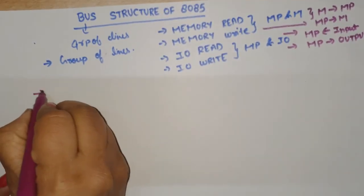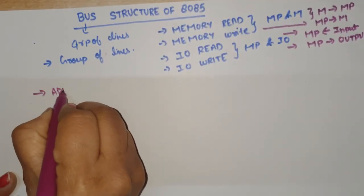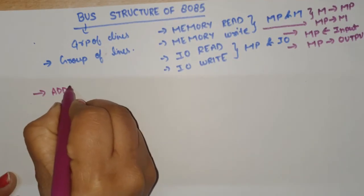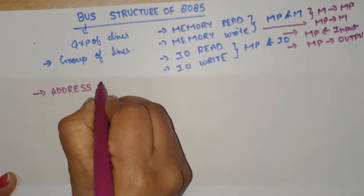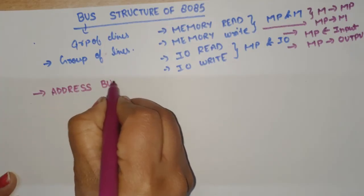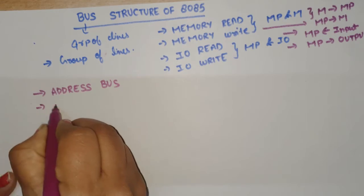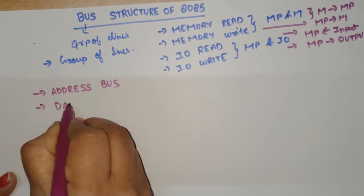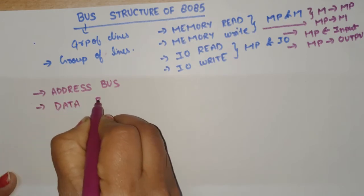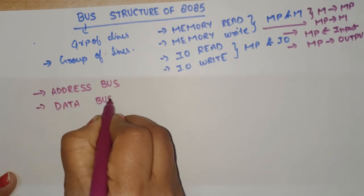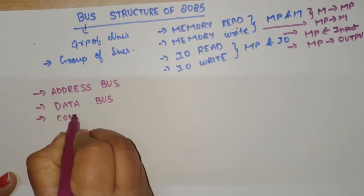Our buses are of three types: the address bus, the data bus, and the control bus.